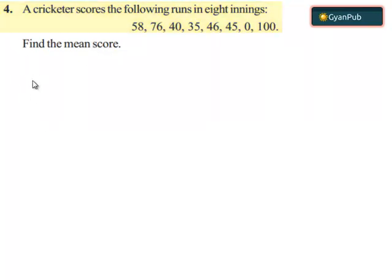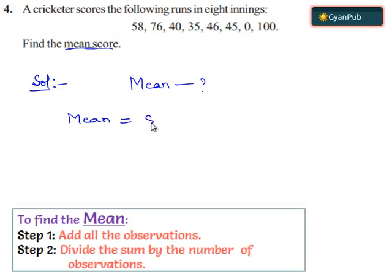Now let's move on to the solution. Here they have asked us to find out the mean score of the cricketer. We can obtain mean by sum of all the observations divided by number of observations.